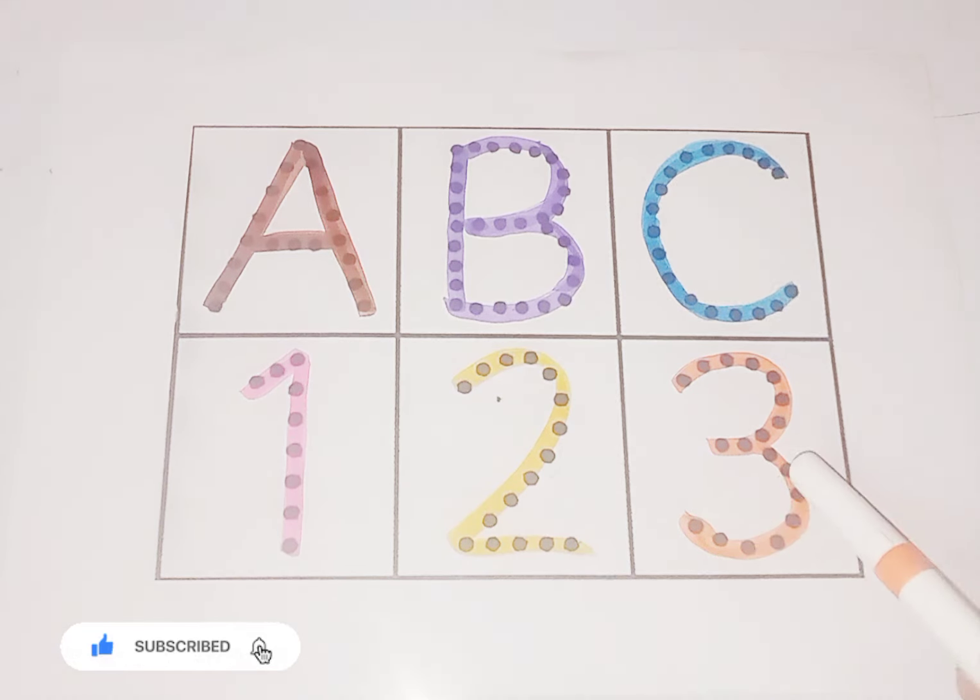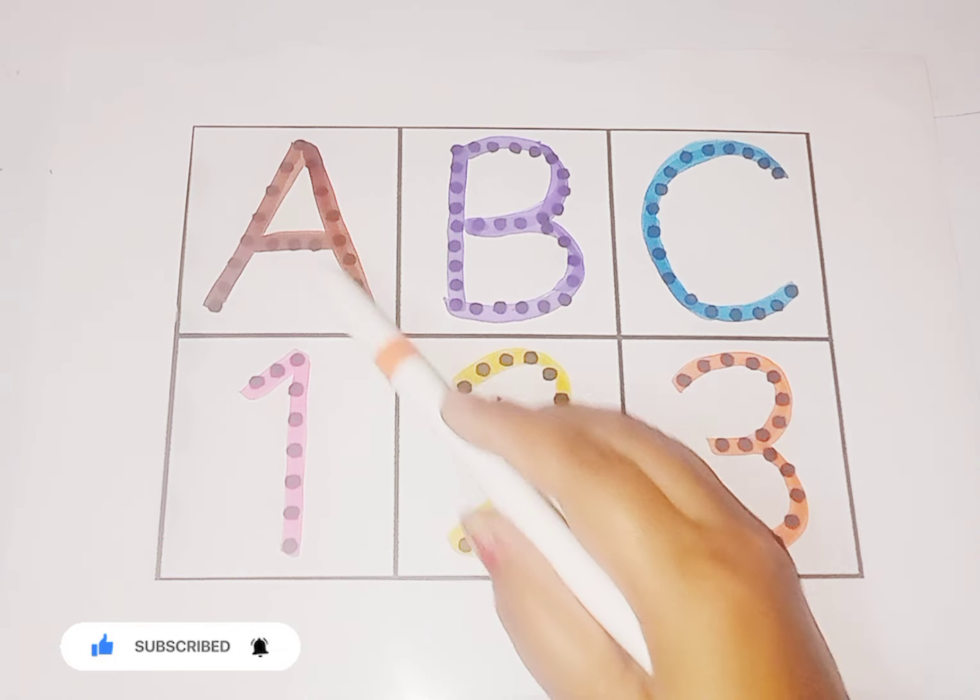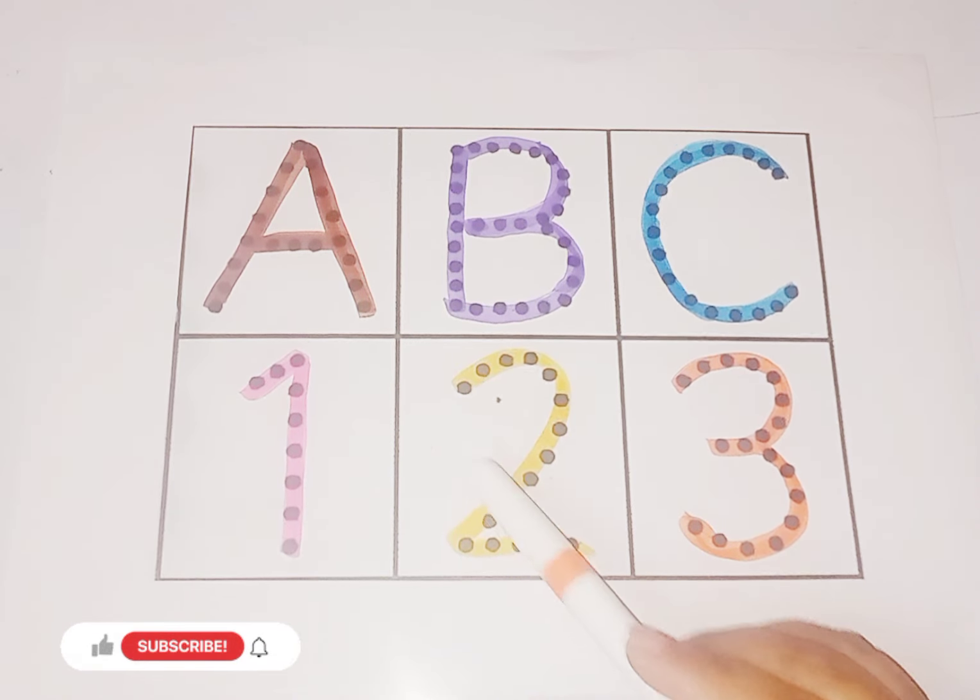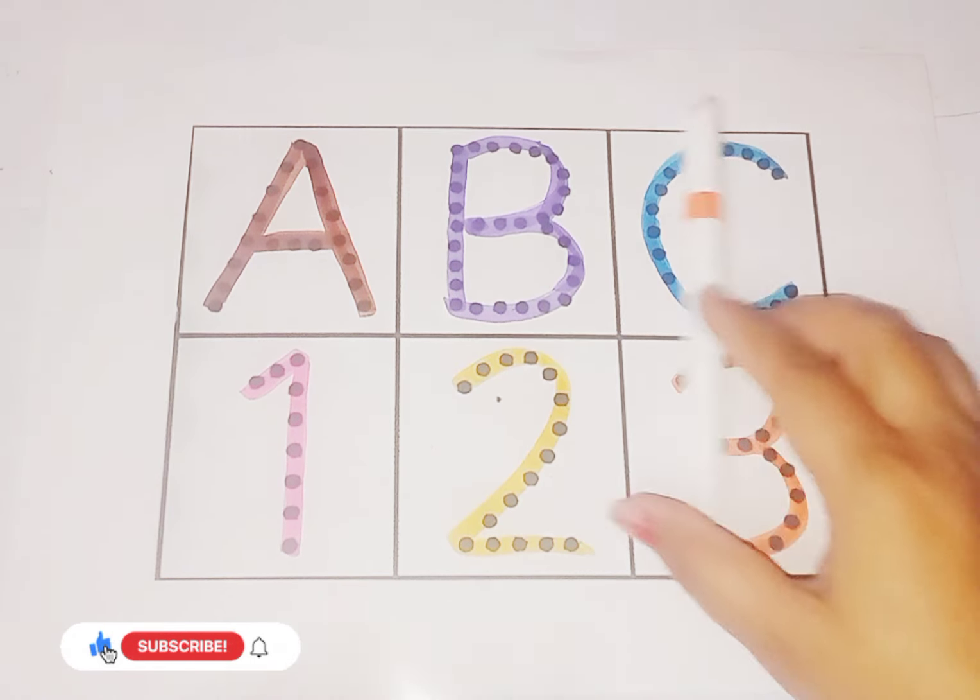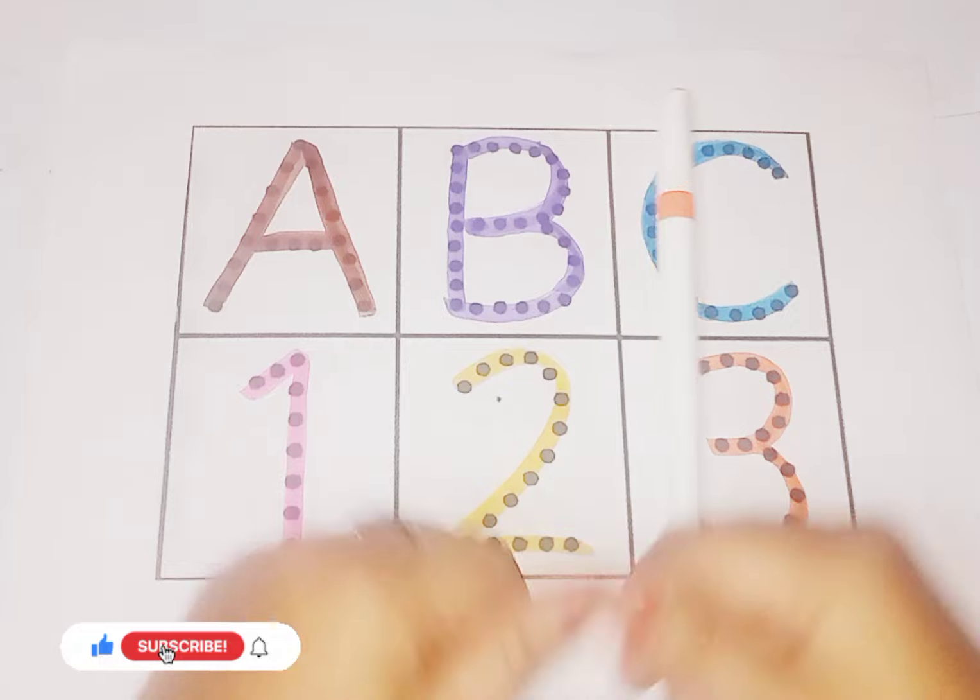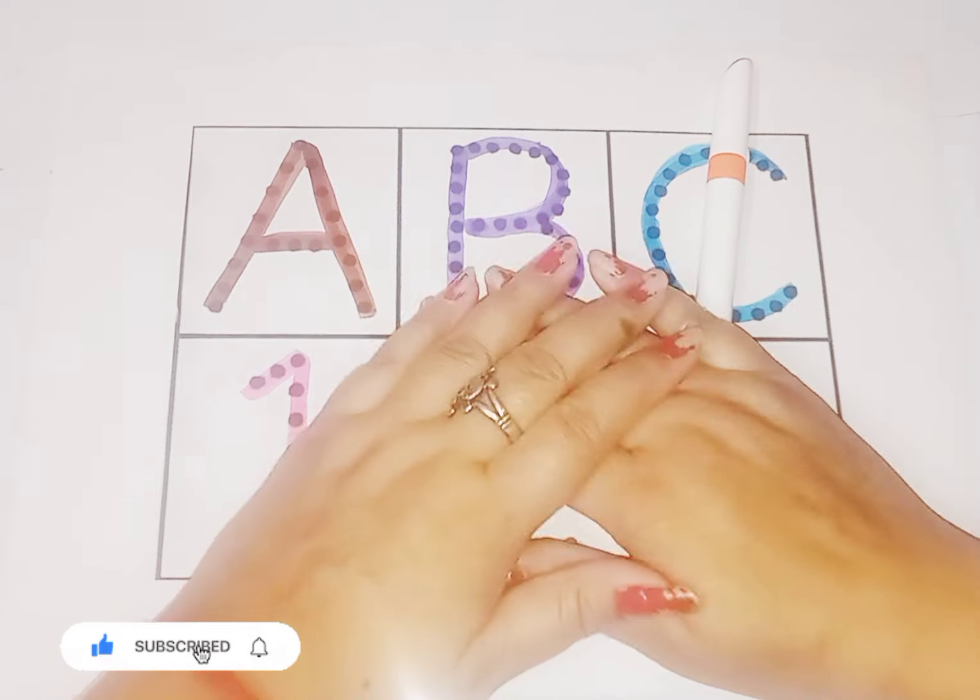So kids, today we learned alphabets and numbers: alphabet A, B, C, and numbers one, two, three. Kids, I hope you liked the video. If you like the video, please like and subscribe my channel. See you next video, bye.